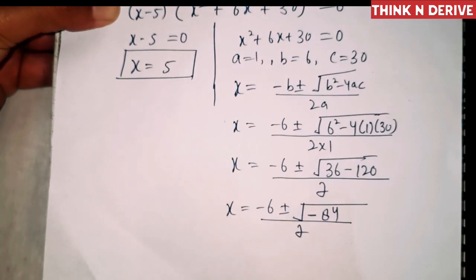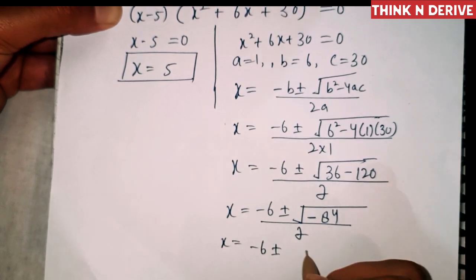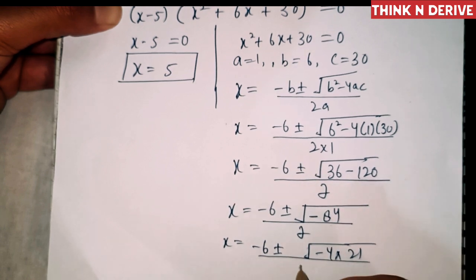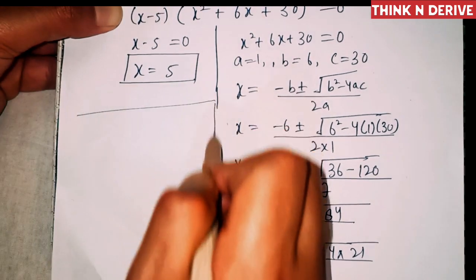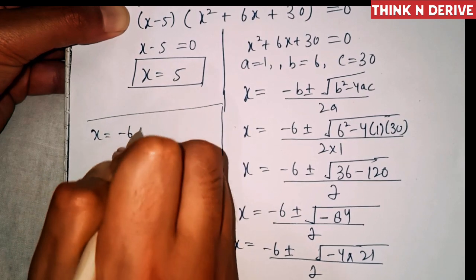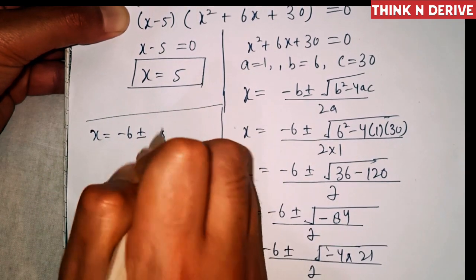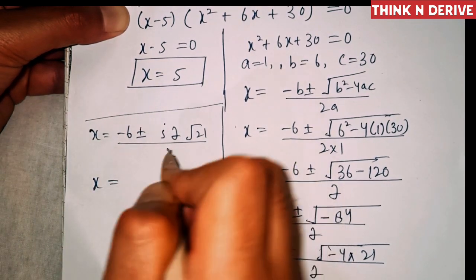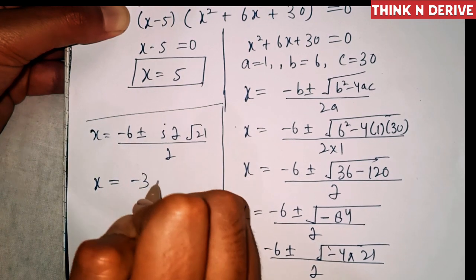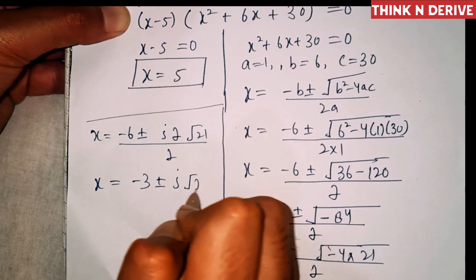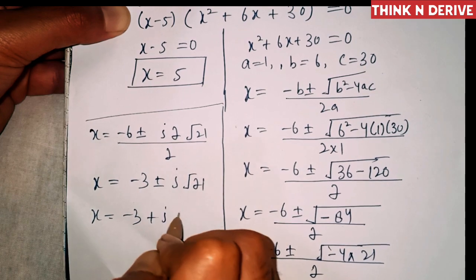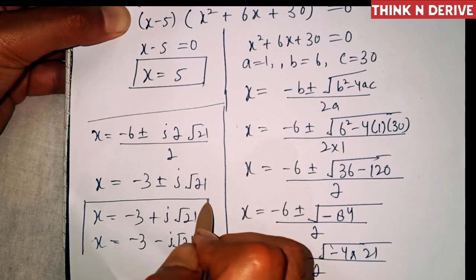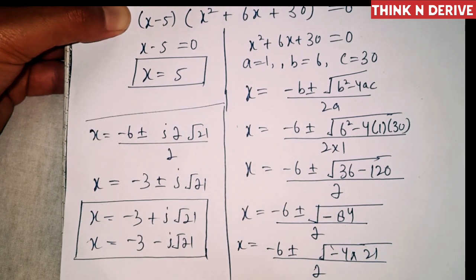So x = (−6 ± √(−4 × 21)) / 2. Since √(−84) = 2i√21, this gives x = (−6 ± 2i√21) / 2, which simplifies to x = −3 ± i√21. So x = −3 + i√21 and x = −3 − i√21 are the other two solutions of this polynomial equation. Hope you have understood this question. Thanks for watching, bye bye.